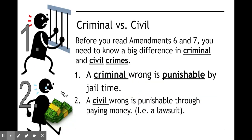For the next two amendments we need to define two terms: criminal versus civil cases. A criminal wrong is punishable by jail time — in a criminal case you are either found guilty or innocent. A civil case is like a lawsuit, and if you lose, you have to pay money to the other party. Those are the two main differences between criminal law and civil law.